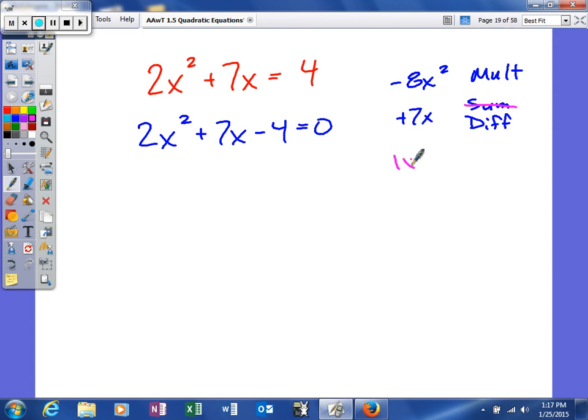8 only has a couple factor pairs. The difference of these is 7, the difference of those is 2. We're looking for a difference of 7. Because it's a positive 7 and our product is negative, these two have to have different signs, and since it's a positive 7, the larger one has to be positive.